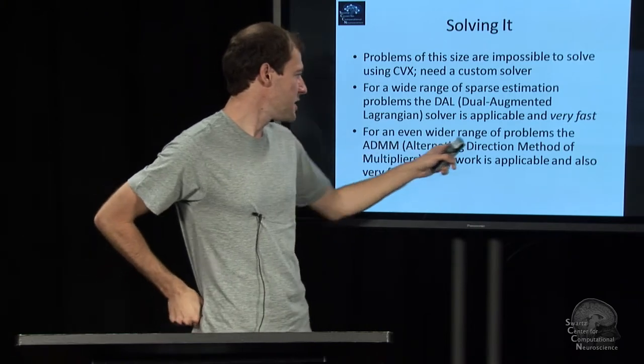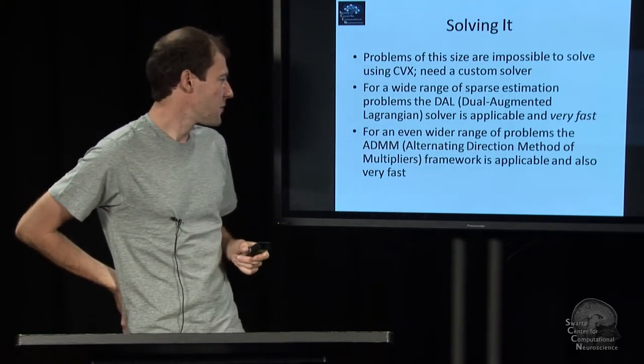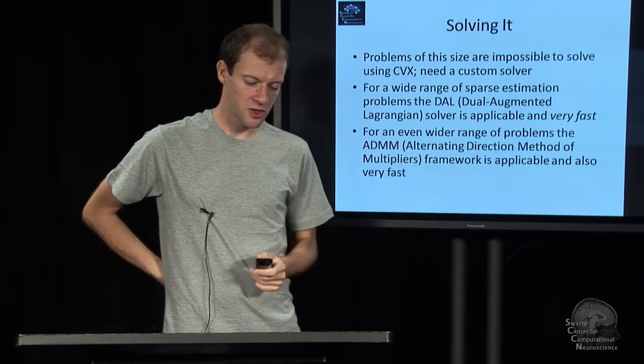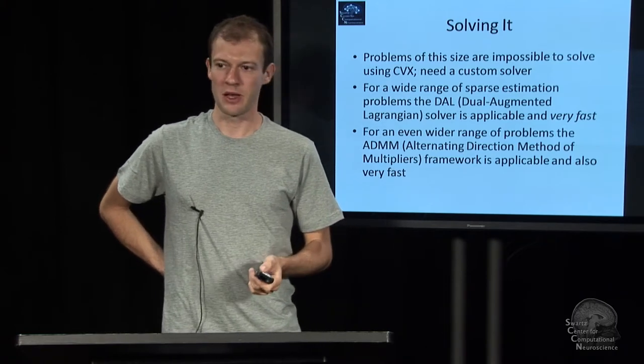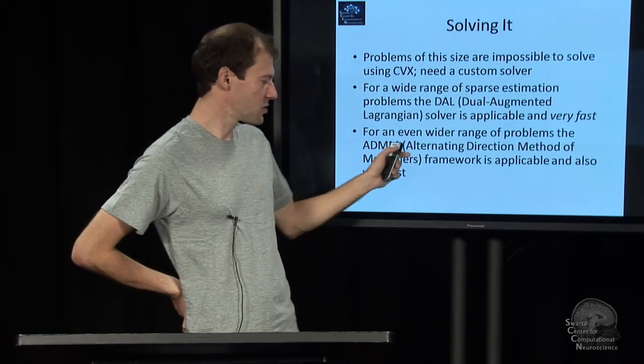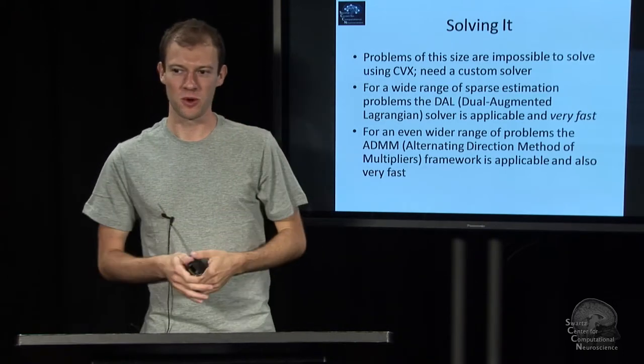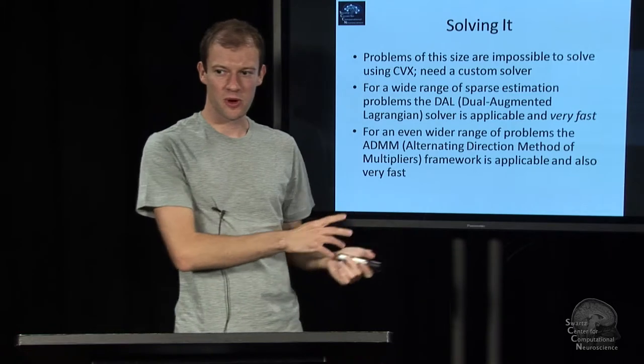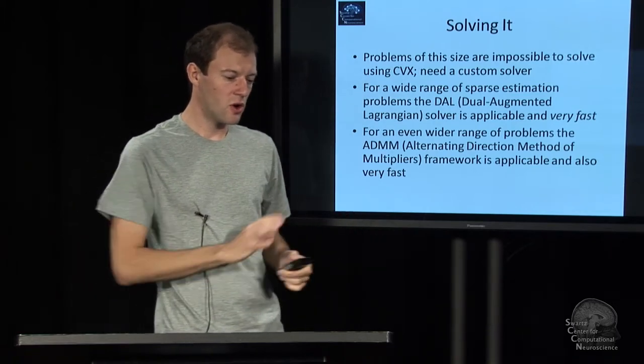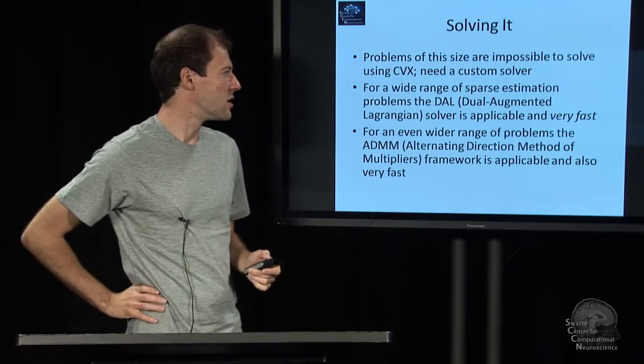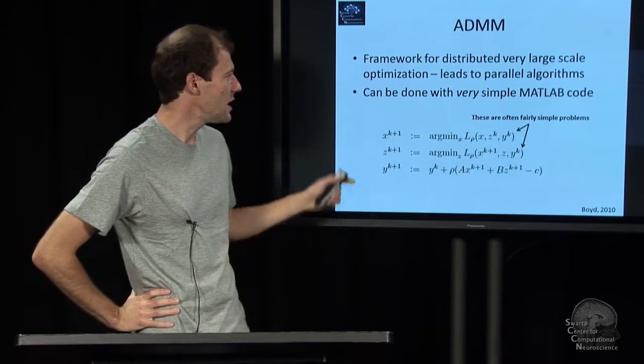That's called ADMM, alternating direction method of multipliers. And that is not only very fast, but it also gives rise to very, very simple MATLAB code. There is a web page, if you Google for this, where they have something like 20 examples. And it's usually a one-page MATLAB script that solves various kinds of problems of similar ballparks of complexity.